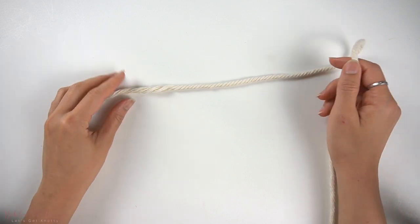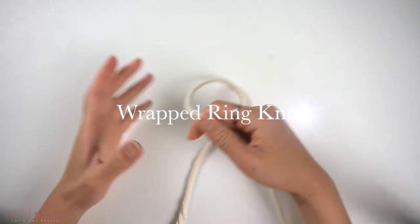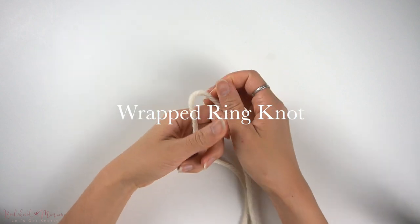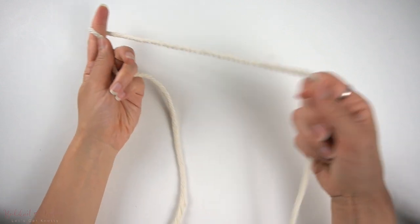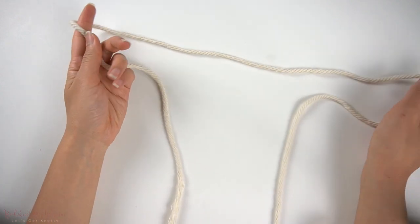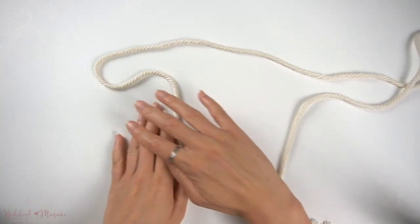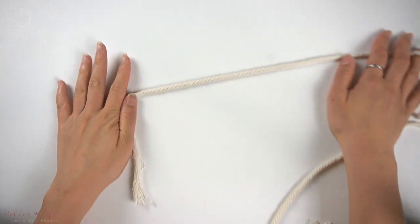In today's tutorial, we will be going over a wrapped ring knot. We will be making a wrapped ring without any other object or ring in the center. We're purely just going to use cord to make this ring.